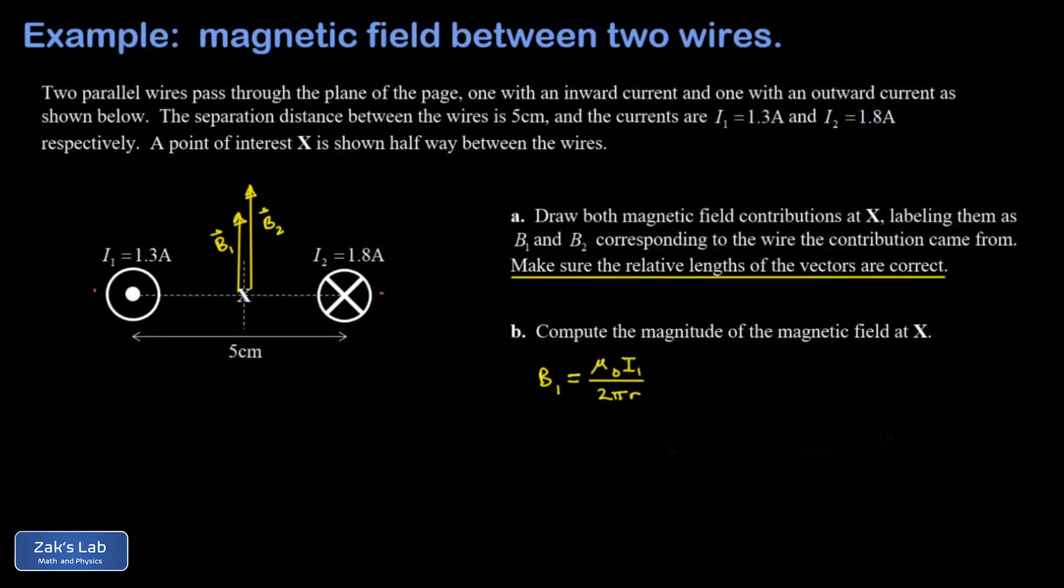Mu-naught is called the permeability of free space. That's 4 pi times 10 to the negative 7 with units of tesla meters per amp. And r is the distance from that current that's generating the magnetic field. So plugging in the numbers for wire number one, the distance from this wire is 2.5 centimeters or 0.025 meters.